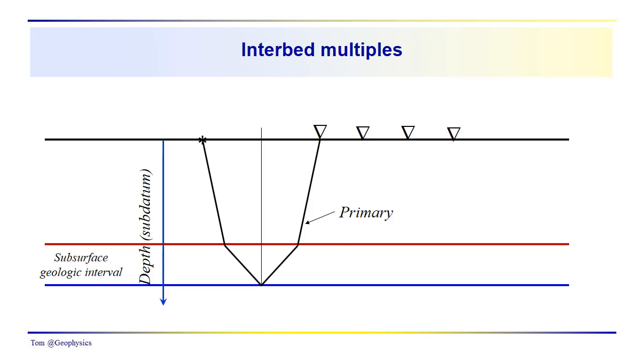it could be a gas sand, or it could be some other low velocity interval for some reason. Or it could be a high velocity interval. But we have large reflection coefficients at the top and the bottom.